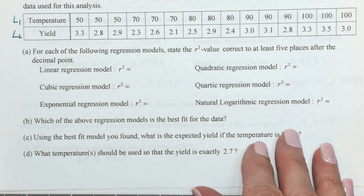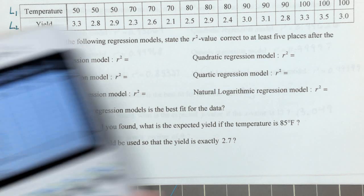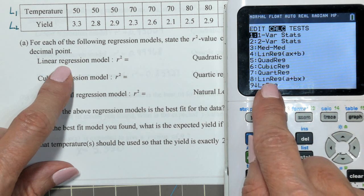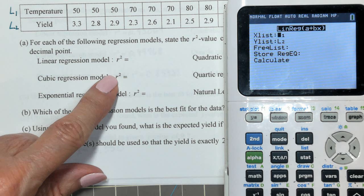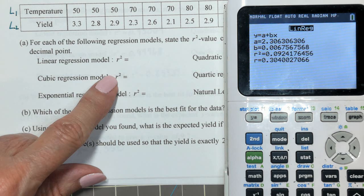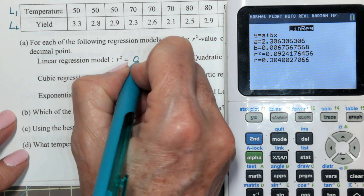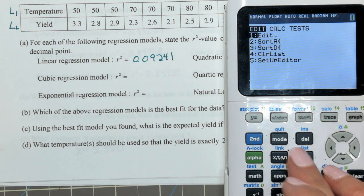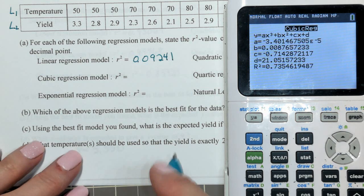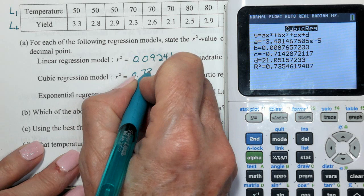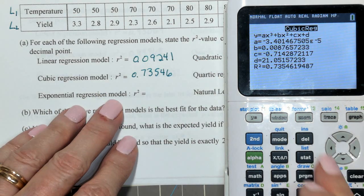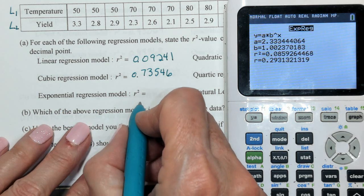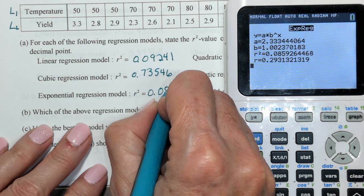For each of the following regression models, state the R squared value. Correct to at least five decimal places after the decimal point. So, stat. I'm going to do the linear regression model first. I'm going to use number eight. R squared is low. It is .09241. The cubic one, number six. R squared, a little bit better, .73546. Exponential. Exponential is zero down there. It's way down. And this is not very good, .08592.